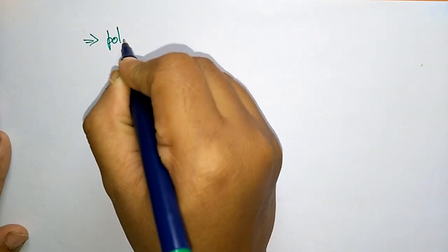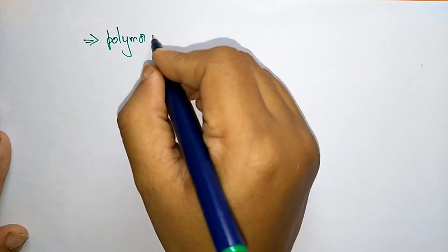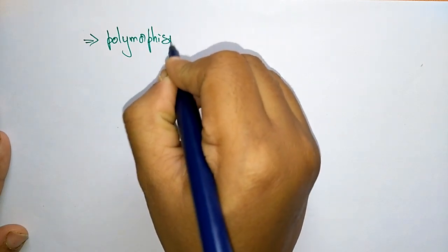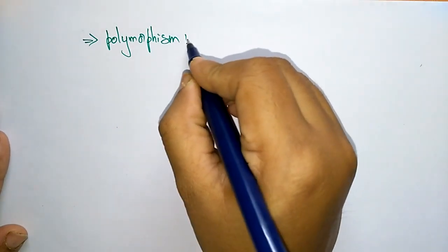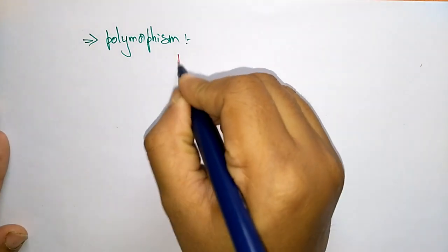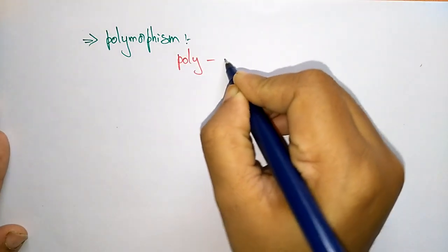Hi students, coming to the next topic that is polymorphism and inheritance. In the previous video I explained two more features of object-oriented programming, that is abstraction and encapsulation. Now let us see in this video what is polymorphism and inheritance. The word polymorphism itself is saying: poly means many.